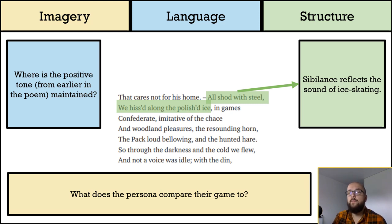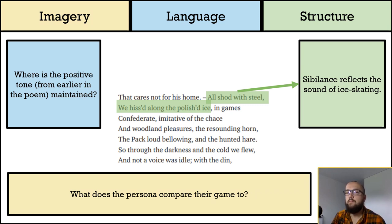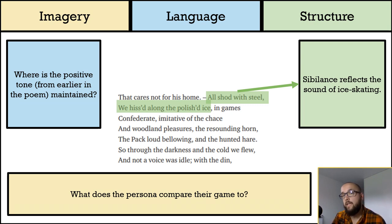The use of sibilance — the repetition of the 's' sound — reflects the sound of ice skating. More than just an example of how a poem's structure can reflect its content, this sibilance could express Wordsworth's emotions for ice skating, an intensity which is representative of the Romantic genre. Wordsworth was known to love ice skating — something he maintained into old age and taught his children.